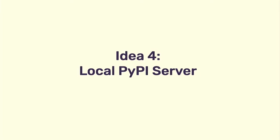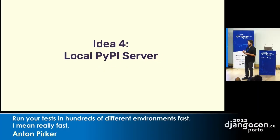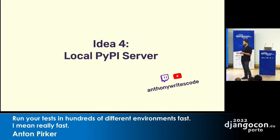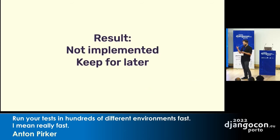The next idea was a local PyPI server. Even with virtual environments in memory, I still had to download all my dependencies from PyPI and install them. We have an internal PyPI server at Sentry — Anthony Sottile set it up to speed up CI for our main monolith repo, which is Django-based. On this internal server, a lot of packages are there, but all the dependencies I needed — like those ancient Django versions — are not there. I could have added them, but I didn't implement it for now and kept the idea for later.